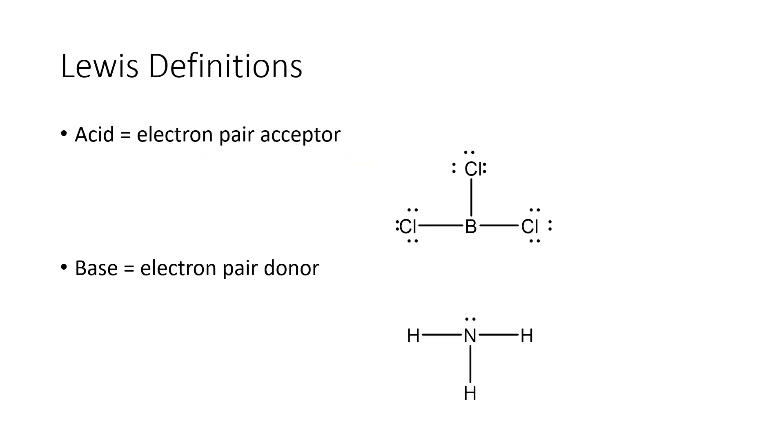The Lewis definitions are in terms of electrons. Now this is the same Lewis that came up with Lewis dot structures, so it was all about electrons and electron pairs. So the acid, according to the Lewis definition, is an electron pair acceptor. And the example of an acid I gave is this molecule BCl3. Now as you're looking at this molecule, hopefully something in your brain is saying, wait a minute, there's a problem with this structure because boron does not have an octet.